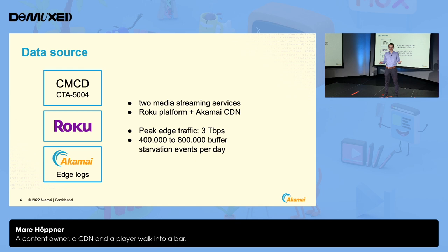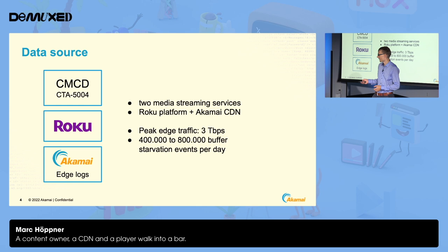At peak we analyzed traffic of roughly three terabytes per second and had around 400,000 to 800,000 buffer starvation events per day. That might not sound like much, but buffer starvation is actually rare, so to pull out a complete session you still have to go through the full dataset. We were surprised because the signal can be very mixed — from ad insertion, multi-CDN setups, CDN failover — so collecting logs from a single CDN makes clean signals hard to get. Most of the time we had to sanitize the dataset.